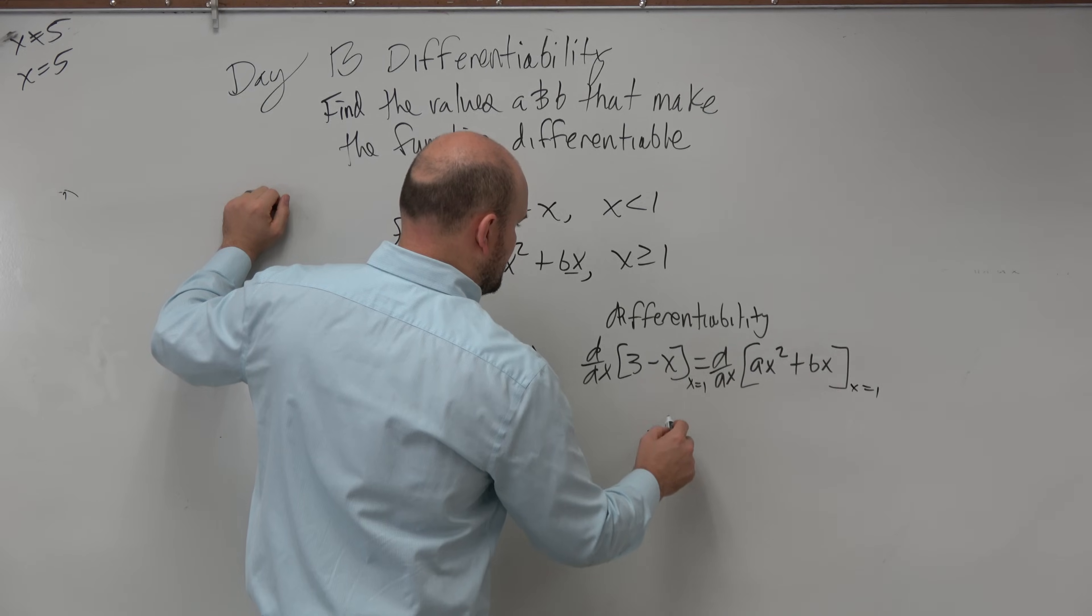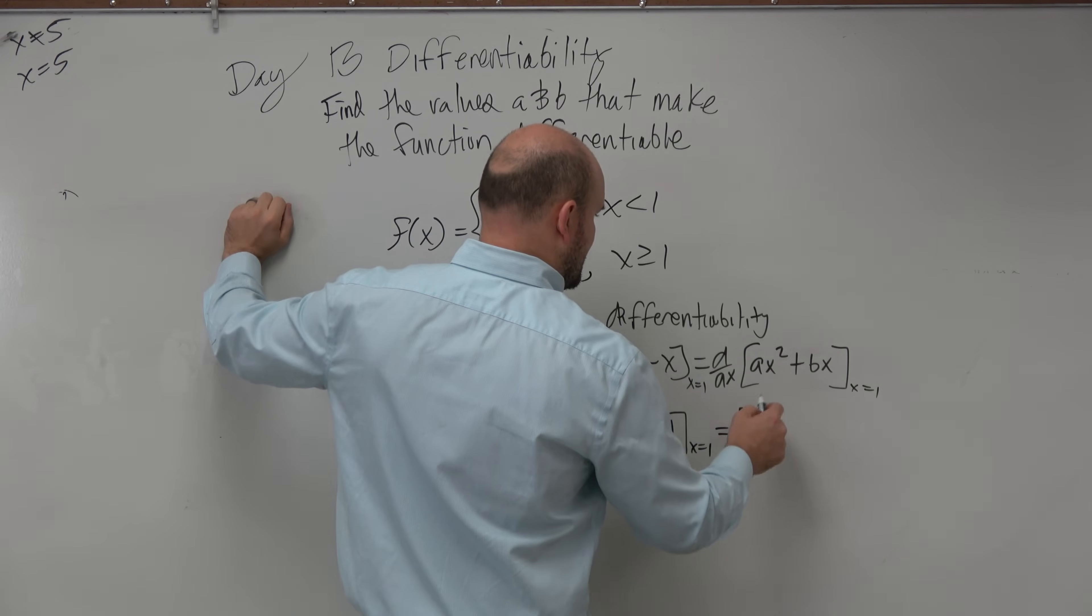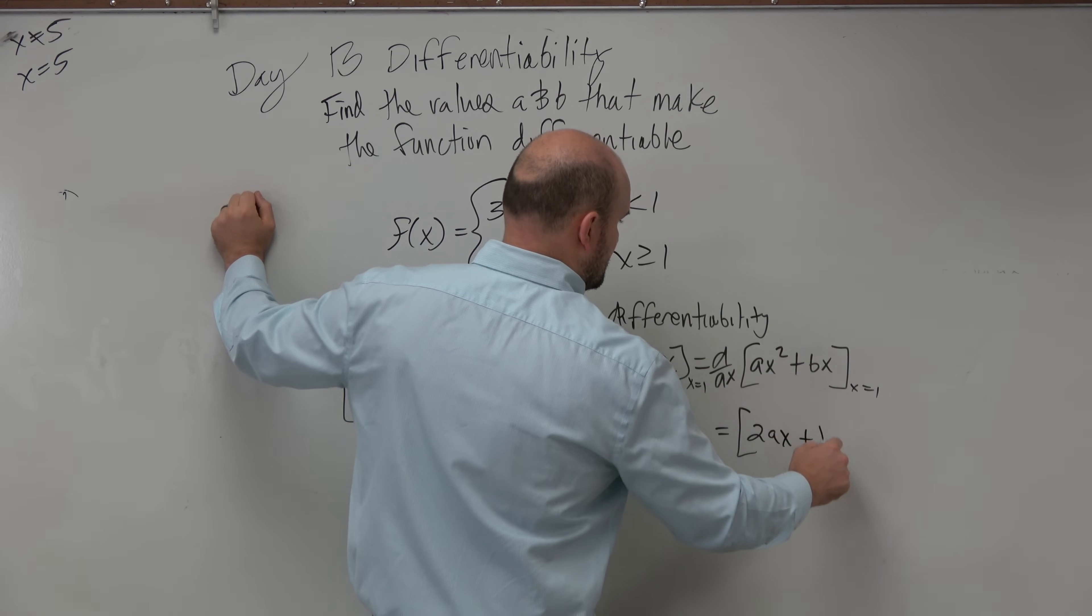So, therefore, here, I'm just going to have negative one at x equals one, which is the same. So, d over dx here is going to be 2ax plus b.